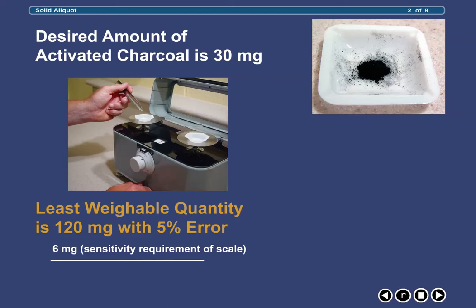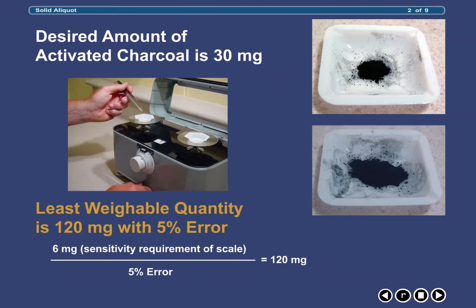In other words, the smallest amount that can be weighed on your balance and not exceed 5% error in weighing is 120 mg, which is visually depicted in this slide. Therefore, our challenge is this.